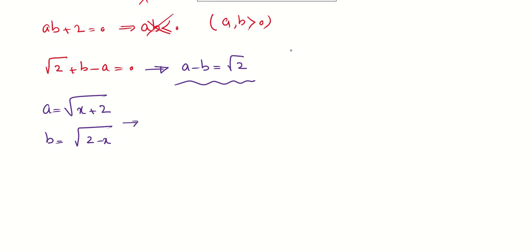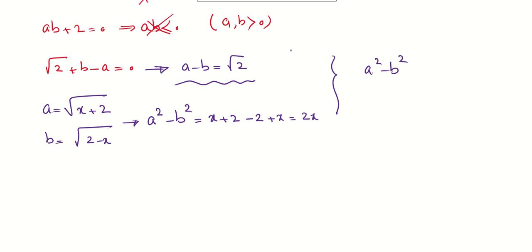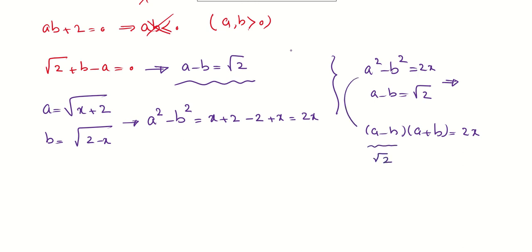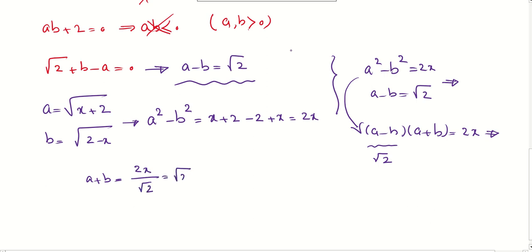Now I can use the identity a²−b² = (x+2)−(2−x) = 2x. Since a−b = √2, and a²−b² = (a−b)(a+b) = 2x, we get √2·(a+b) = 2x, so a+b = 2x/√2 = √2·x. Combined with a−b = √2, we can solve for a and b.